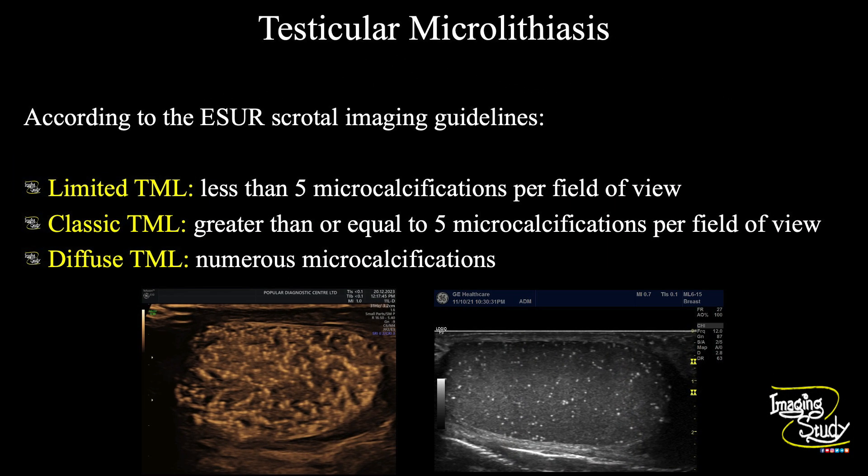We have three different grades or types of testicular microlithiasis. Grade 1, or limited microlithiasis, shows less than 5 microcalcifications per field of view. Grade 2, or classic testicular microlithiasis, shows 5 to 10 microcalcifications per field of view. If it is more than 10, that is diffuse testicular microlithiasis or grade 3.